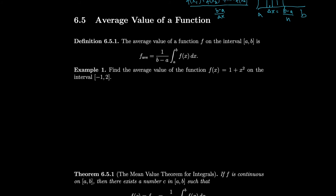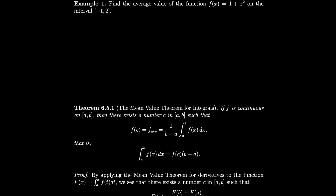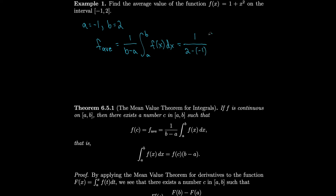Let's do an example. Find the average value of f(x) = 1 + x² on the interval from minus 1 to 2. So a equals minus 1, b equals 2. The average value is 1 over b minus a times the integral from a to b of f(x) dx, which is 1 over (2 minus minus 1) times the integral from minus 1 to 2 of (1 + x²) dx. Taking antiderivatives, we get 1/3 times [x + x³/3] evaluated from minus 1 to 2, which equals 2.